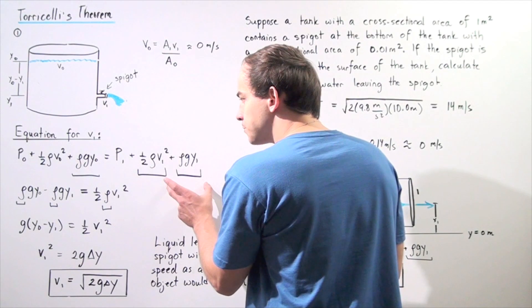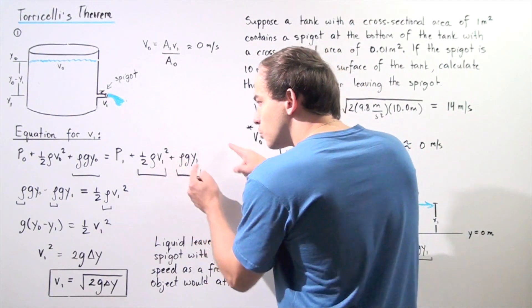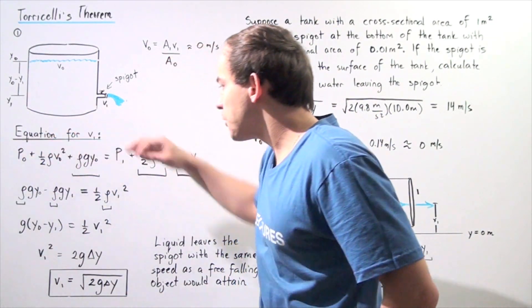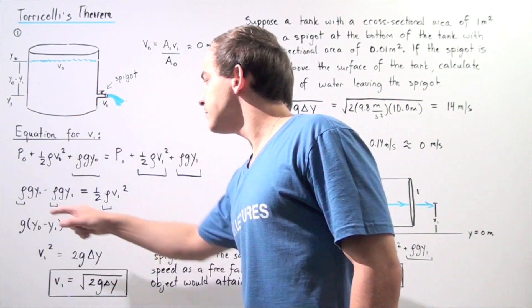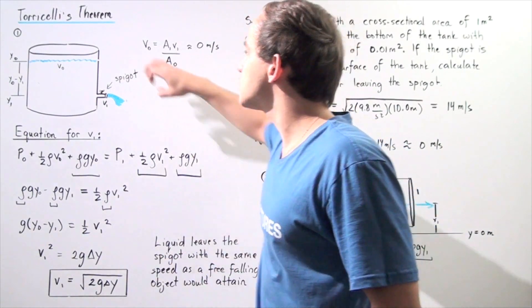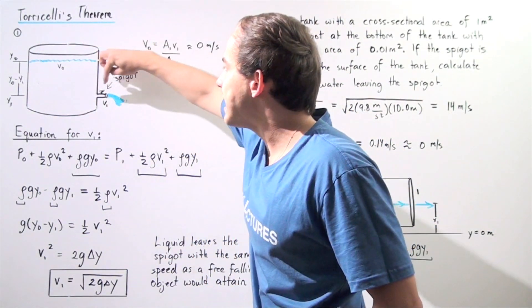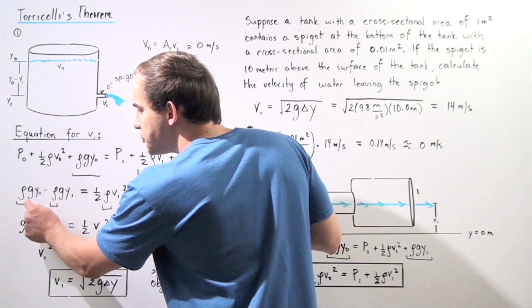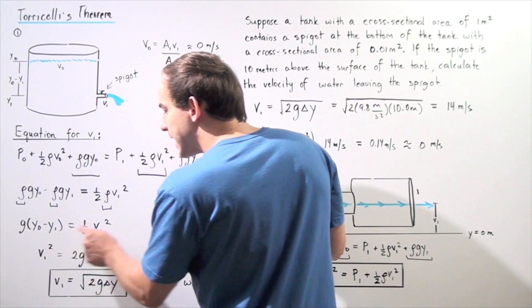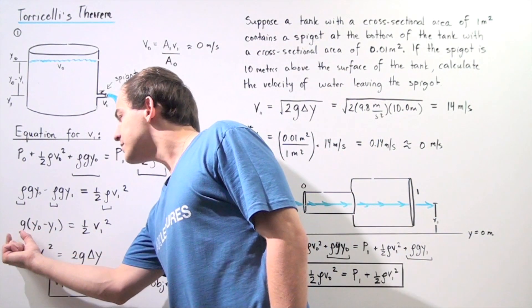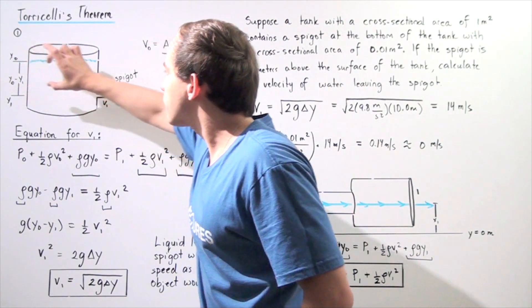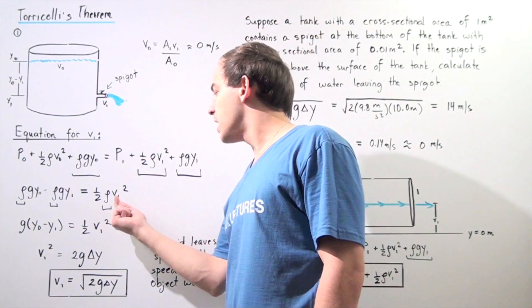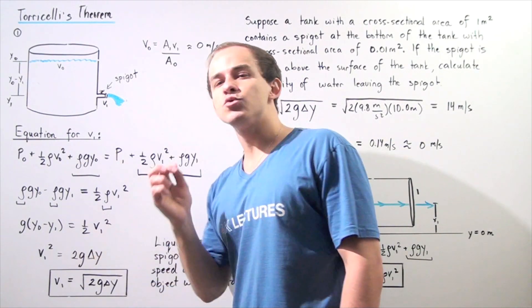We're left with three terms. Bringing the height term from the right side to the left, and noting that every term contains the density, we can cancel the density throughout. On the left side, both terms contain g, so we factor it out. We arrive at: g times (Y0 − Y1) equals one-half times V1 squared.